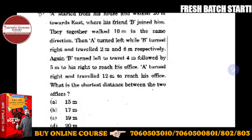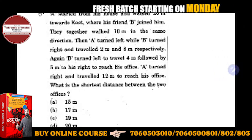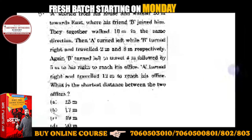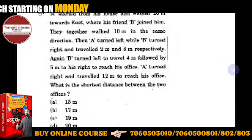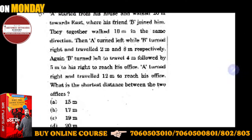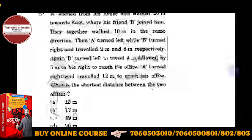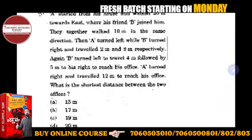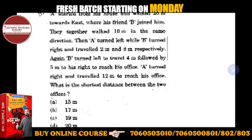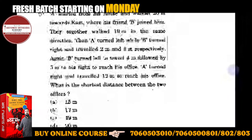A started from his house and walked 20 meters towards east. We focus on the question, it's very easy. A started from his house and walked 20 meters towards east where his friend B joined him.